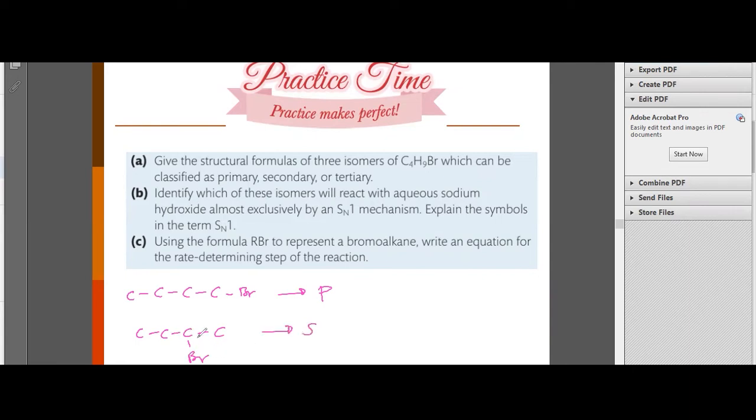Since Br is attached to the carbon that's connected to two R groups. There will be no possibility if we still maintain the straight chain. Now let's change it to a branched chain. This is 1-bromo-2-methylpropane. This is still primary. And then we can also change the position of Br here to create a tertiary.